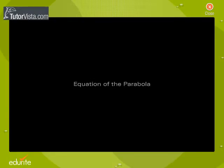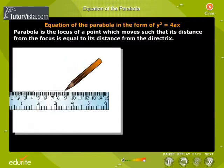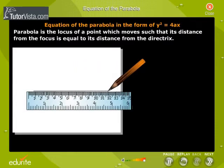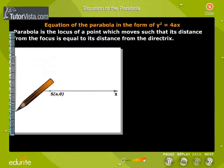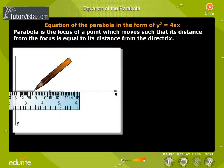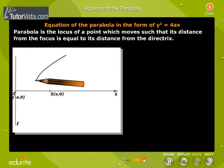Equation of the parabola in the form y squared is equal to 4ax. A parabola is a locus of a point which moves such that its distance from the focus is equal to its distance from the directrix.